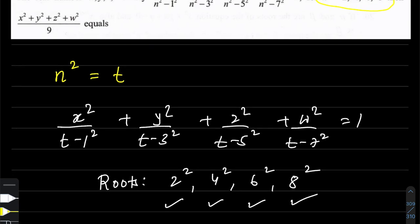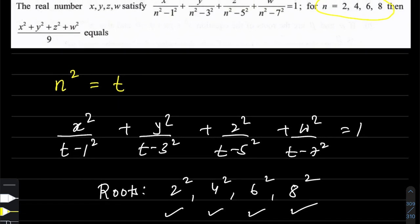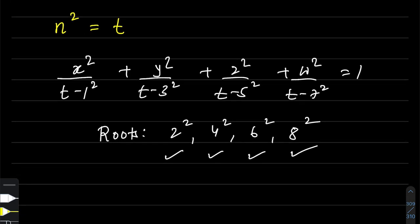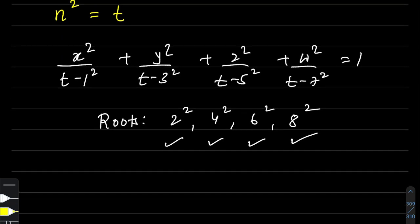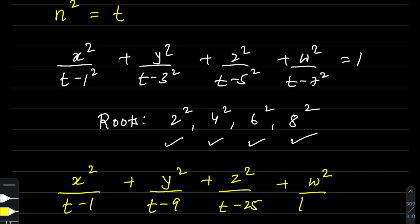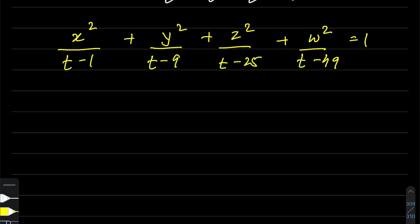Let's see how we can find x² + y² + z² + w² divided by 9. First, let's simplify this. If we take the denominators (t-1)(t-9)(t-25)(t-49) to the right side, our expression will be simplified.